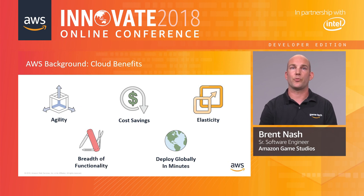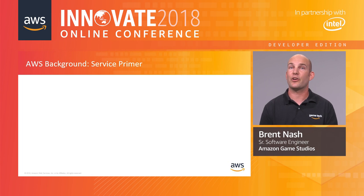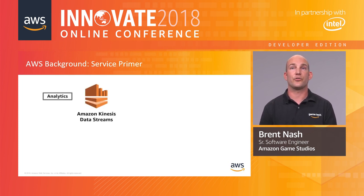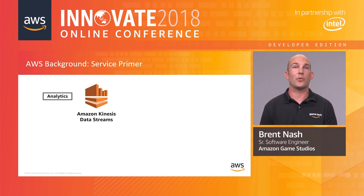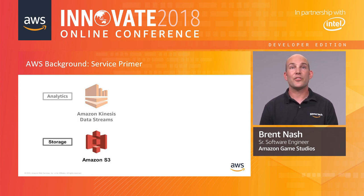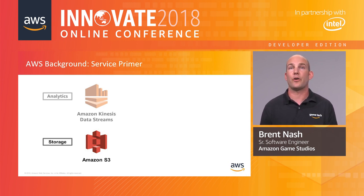Let's talk about the specific services we used. There are over 125 services available, but we'll focus on the four main ones. The first is Amazon Kinesis Data Streams — a fully managed service for collecting and processing large streams of data records in real time. For us as developers, it's a giant buffer where we can send events from game clients, servers, and everywhere else. It autoscales and serves as an entry point for data ingestion. Once data is ingested, we need to store it — and that's where Amazon S3 comes in. S3 is a simple, highly scalable, reliable, low-cost, low-latency storage service, and it integrates well with many other AWS services for analysis and processing.